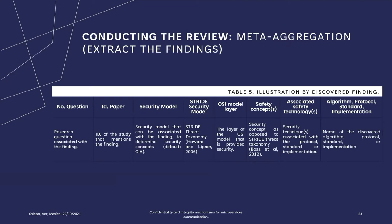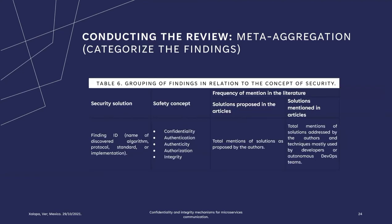The properties associated with each finding include: the research question associated with the finding, the ID of the study that mentions the finding, the security model that can be associated with the finding to determine the security concepts, the FAUSSE taxonomy, the STRIDE taxonomy, the layer of the OSI model that provides security, the security concept as opposed to the STRIDE taxonomy, the security techniques associated with the protocol standard or implementation, and the name of the discovered algorithm, protocol, standard, or implementation. Subsequently, findings were categorized according to their related security property and their appearance frequency in the literature, as shown in Table 6. The solutions were presented in two types: solutions proposed by the authors themselves, and solutions mentioned in their studies.